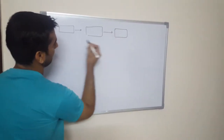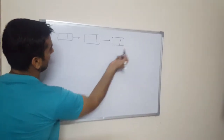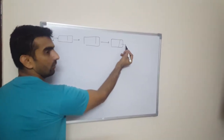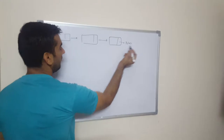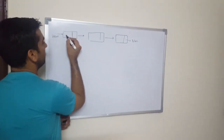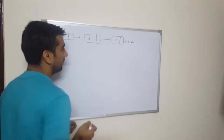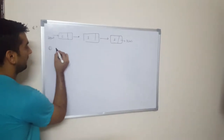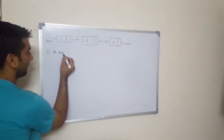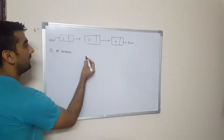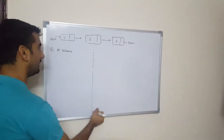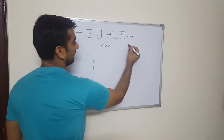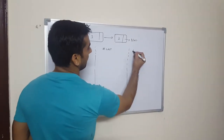Let us assume this is our linked list — we are taking a short linked list of only three nodes. This is my first node with the head pointer, and this is my last node which is ultimately pointing to null, with some integer data. Insertion in a linked list can happen at three places: at the beginning, at the last, and at a particular position.